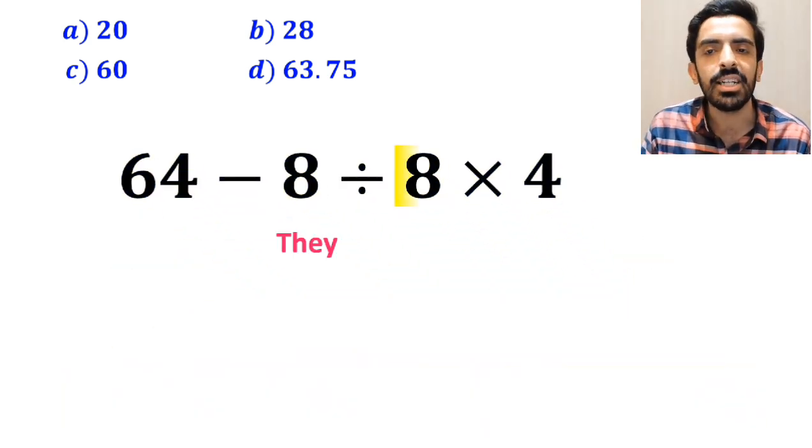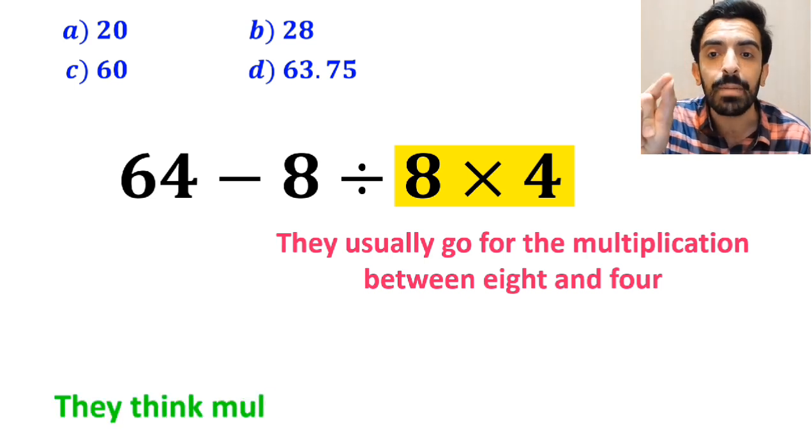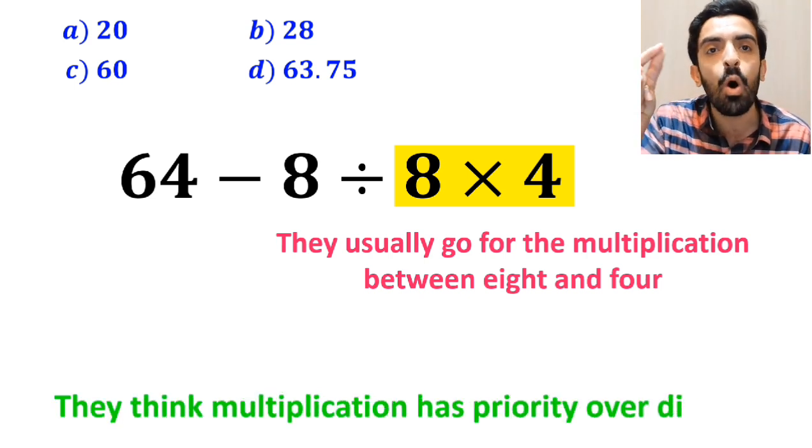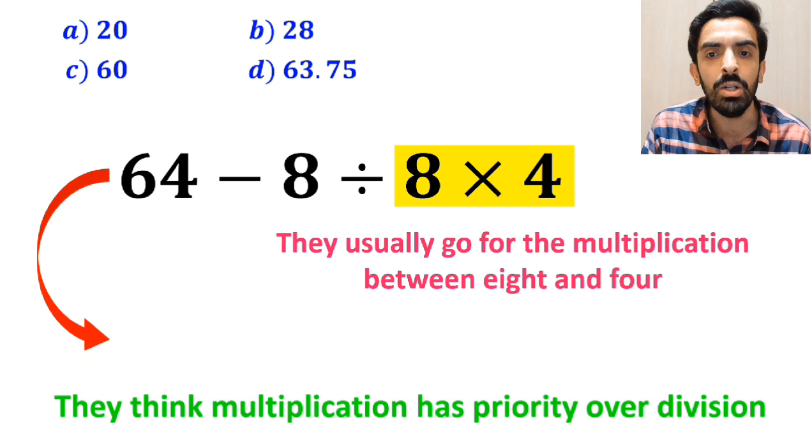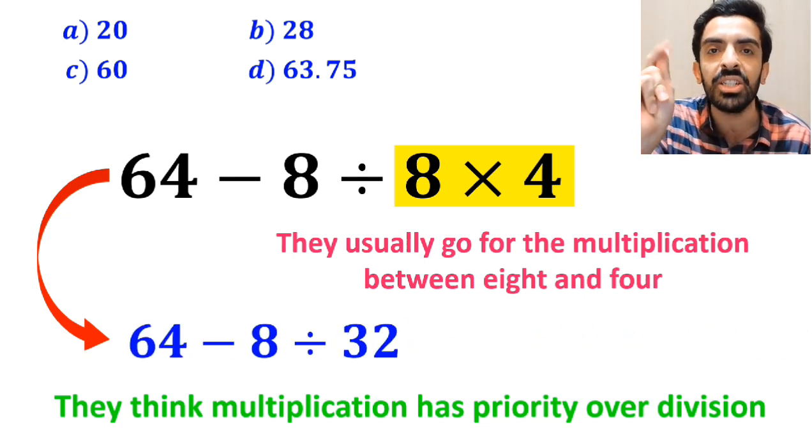In the next step, they usually go for the multiplication between 8 and 4 because they think multiplication has priority over division. So, they rewrite this expression as 64 minus 8 divided by 32.